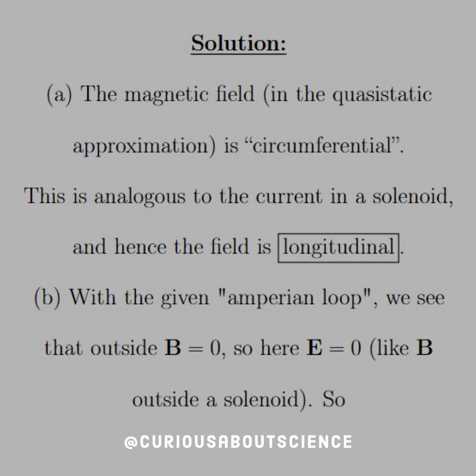So we see that since the current, since in the solenoid the current is running circumferentially, we know the field is longitudinal. We're approximating, we're showing that since the magnetic field is circumferential, the electric field has to be longitudinal. So we're just comparing and contrasting what we know. Pretty easy there, I think.